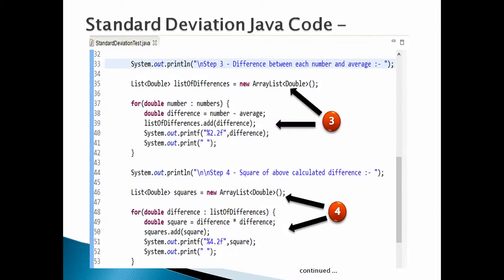Step 3: calculate the difference between each number and average or mean of the numbers. Create an ArrayList, say listOfDifferences, which will hold difference of each element in the list with average of numbers calculated above. Here we will iterate over the numbers list and take difference of each number with average of numbers calculated above. Finally, we will add it to list of differences. Moving ahead.